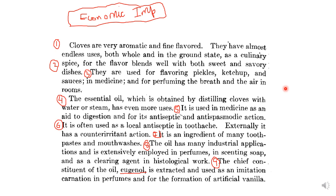The oil has many industrial applications and is extensively employed in perfumes, incense, soaps, and as a clearing agent in histological work. The chief constituent of the oil, eugenol, is extracted and used as an imitation carnation in perfumes and for the formation of artificial vanilla.